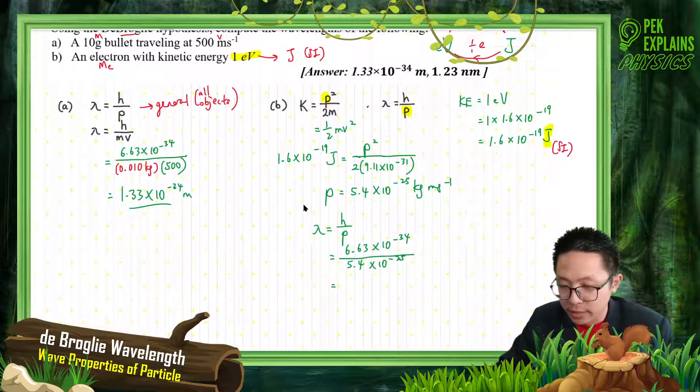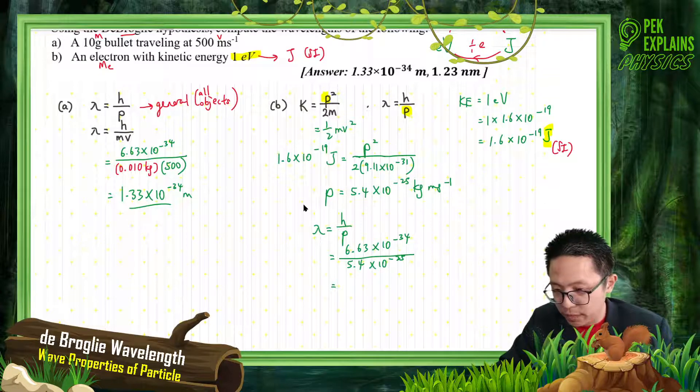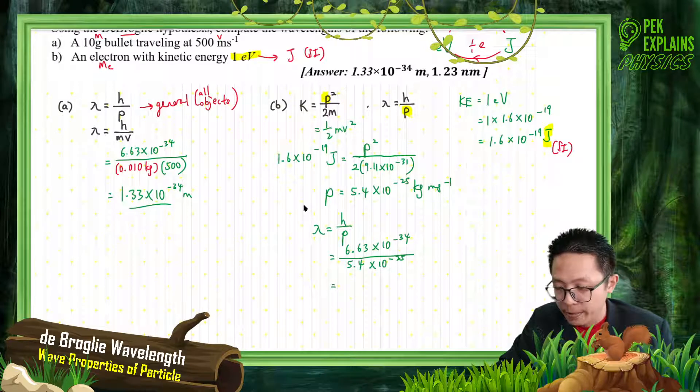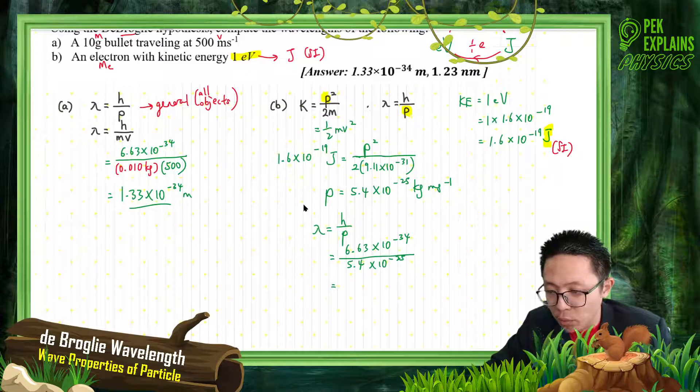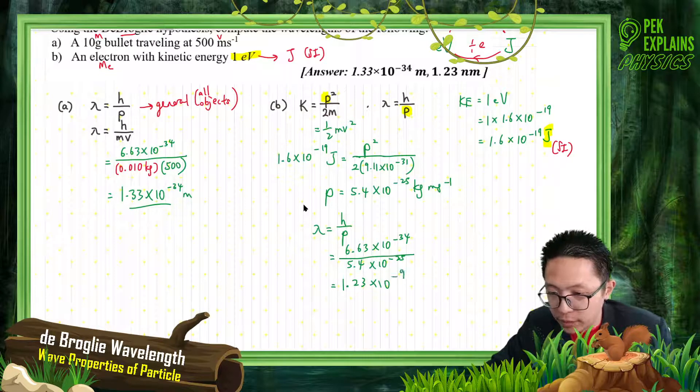What is the answer? 6.63 exponent negative 34 divided by - what's the answer? It's 1.23 exponent negative 9 meters. This should be the answer.